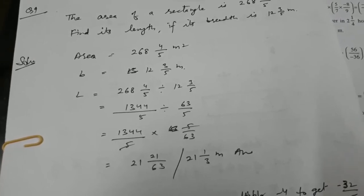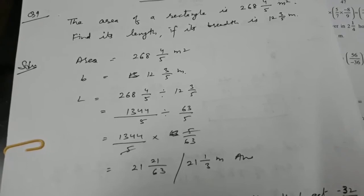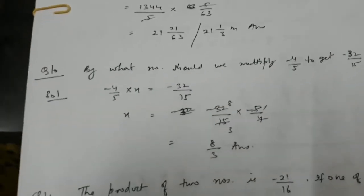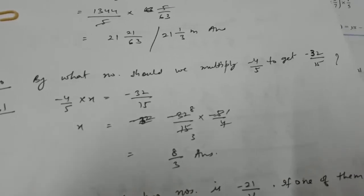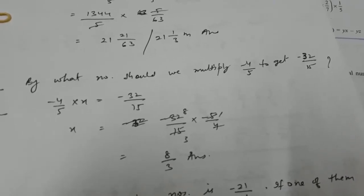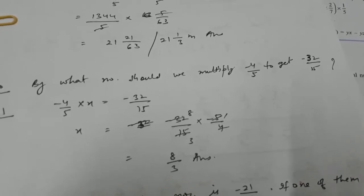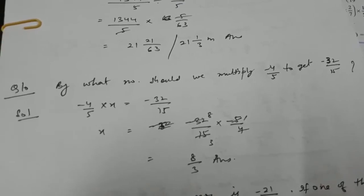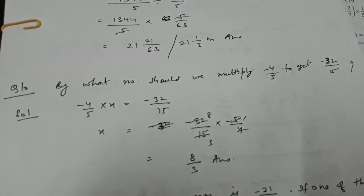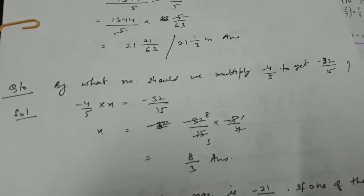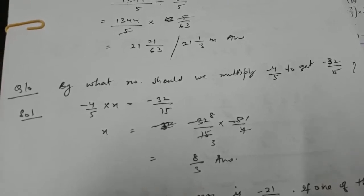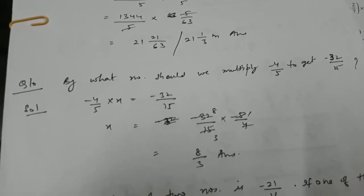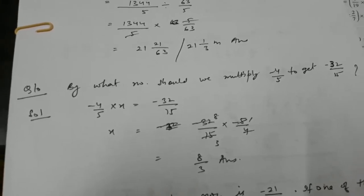After cancellation, the length is 21 whole number 1 by 3 meters. In question number 10, we have to find the number which when multiplied by minus 4 by 5 gives minus 32 by 15. Assume that number is x, so minus 4 by 5 multiplied by x equals minus 32 by 15. Therefore x equals minus 32 by 15 multiplied by minus 5 by 4. After cancellation, that number is 8 by 3.